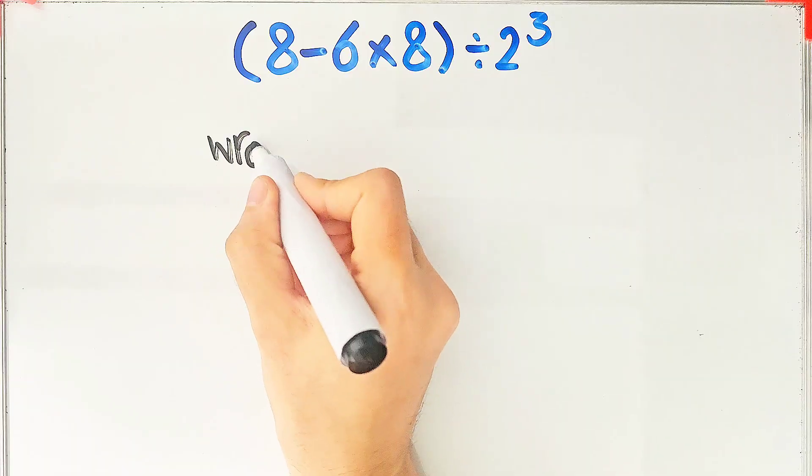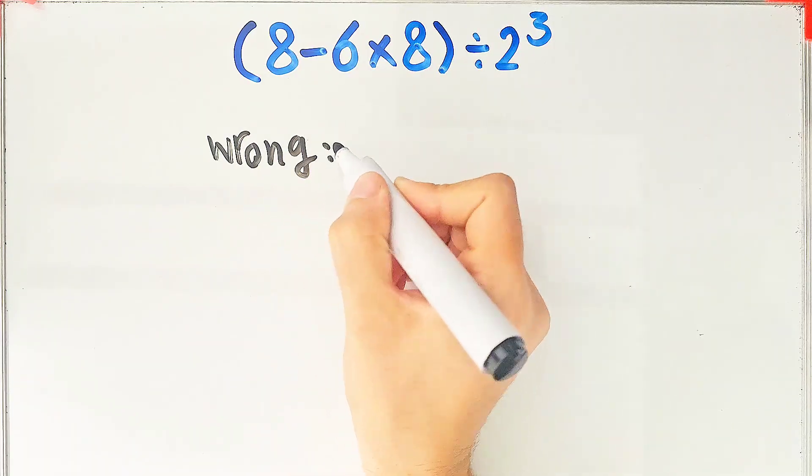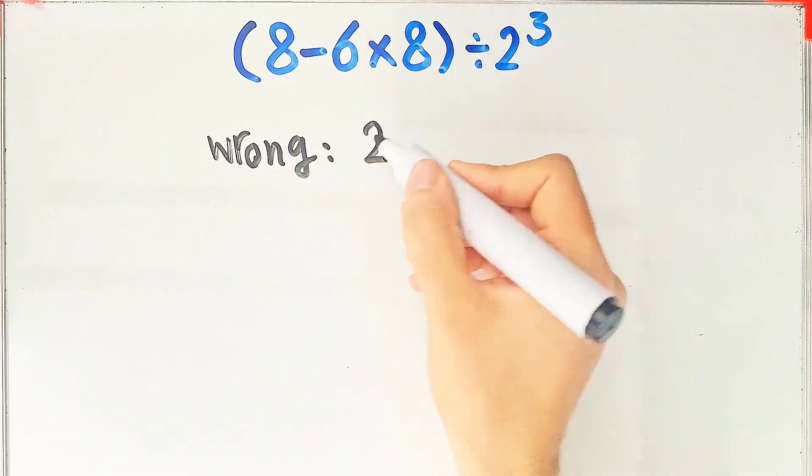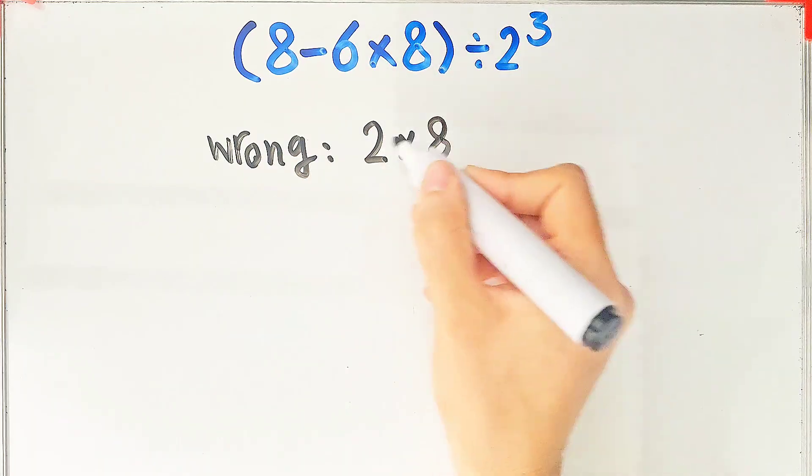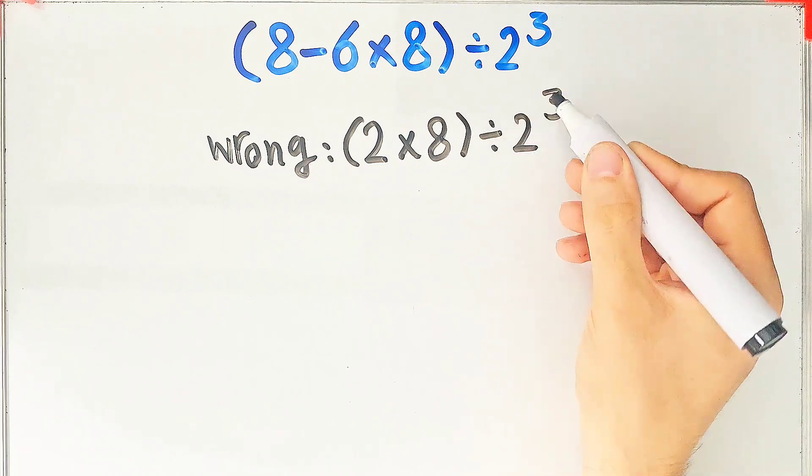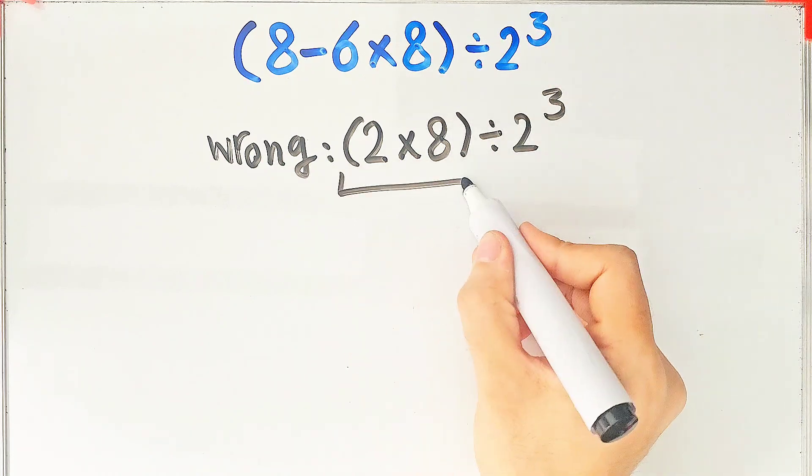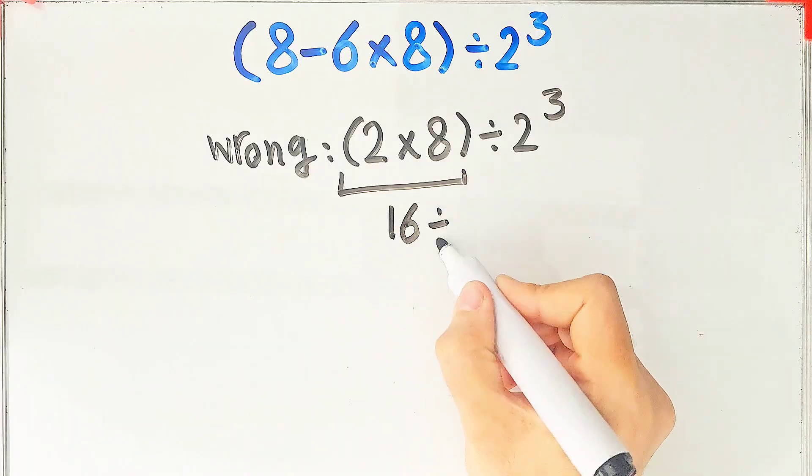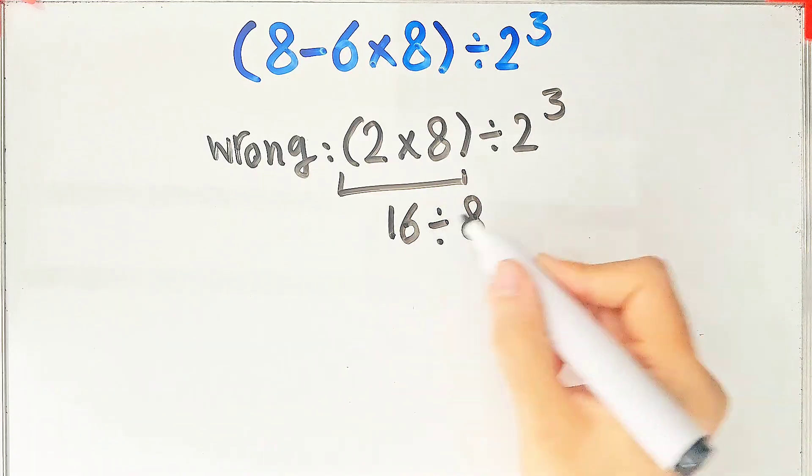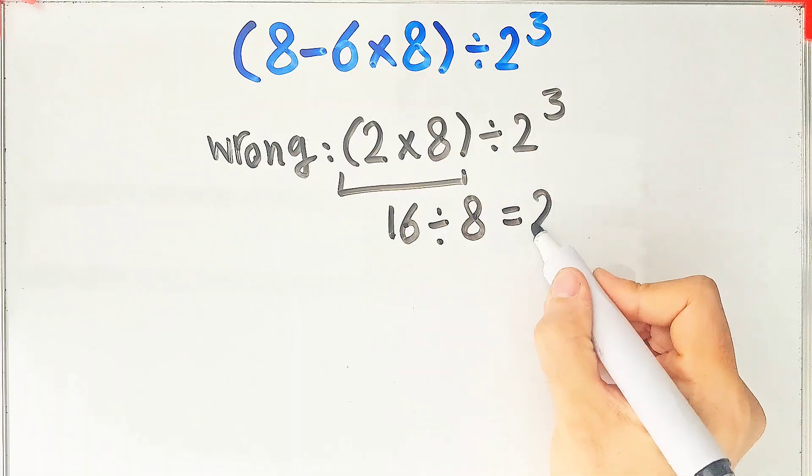In the wrong way of solving this question, some people solve this question like this. 8 minus 6 equals 2. 2 times 8, then divided by 2 to the power of 3. 2 times 8 equals 16, and 16 divided by 2 to the power of 3, which equals 8. They say the final answer of this question equals 2.